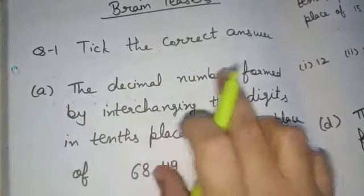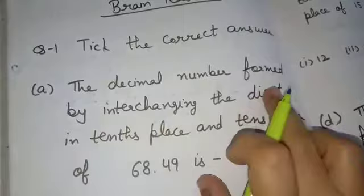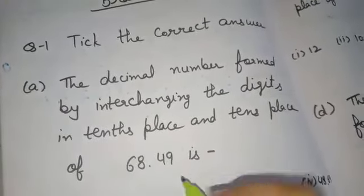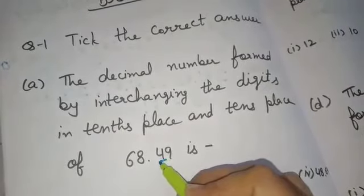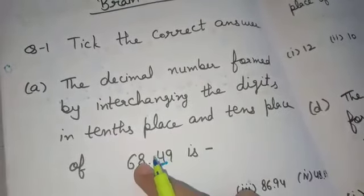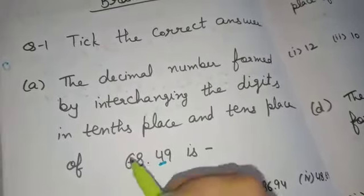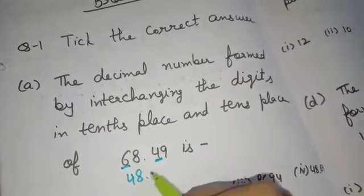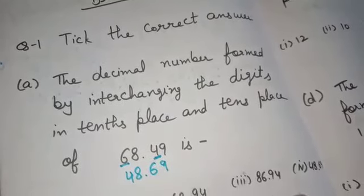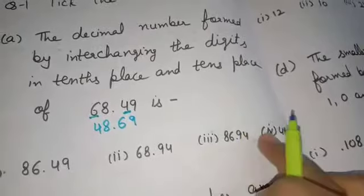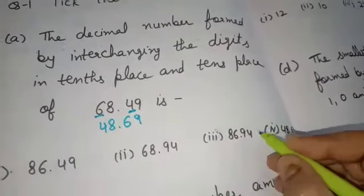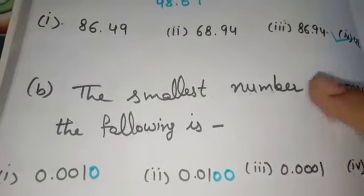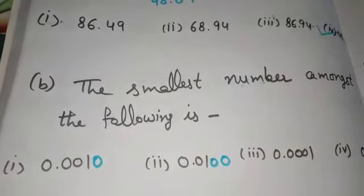Part A asks for the decimal number formed by interchanging the digits in the tenths place and hundredths place. The tenths digit is 4 and the hundredths digit is 6, so we interchange them — 4 will come in place of 6 and 6 in place of 4. So the answer is the fourth option: 48.69.